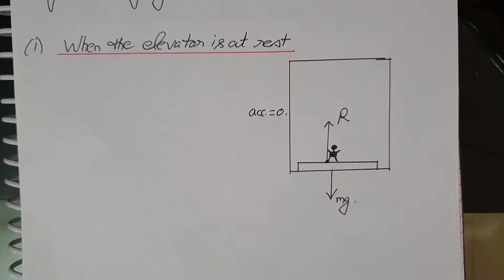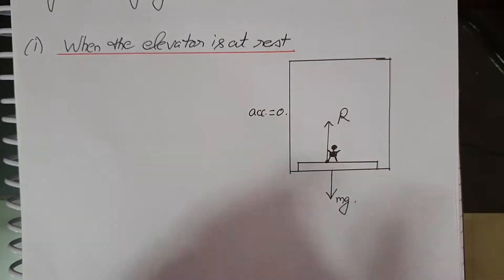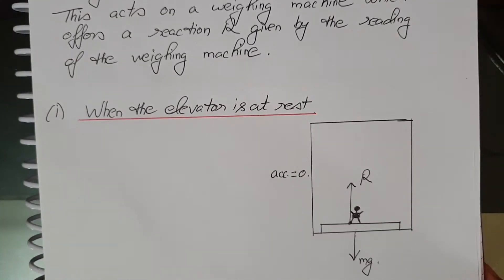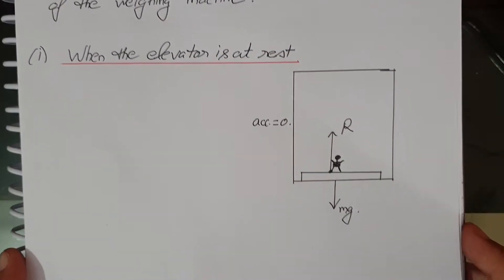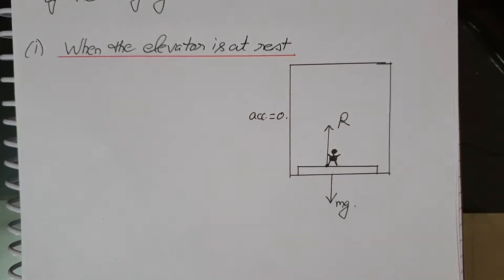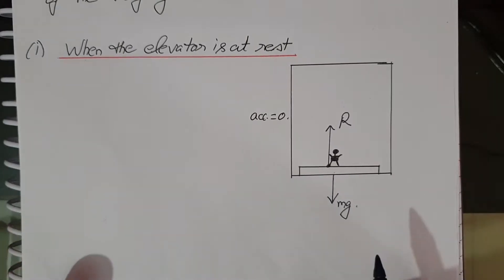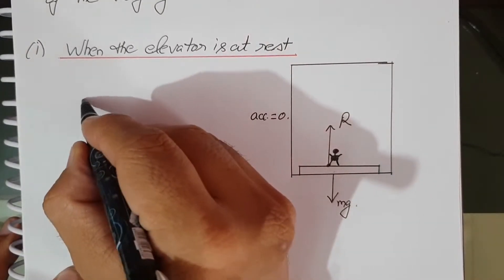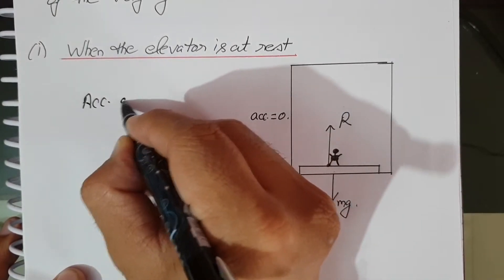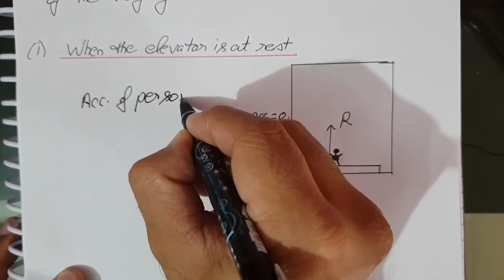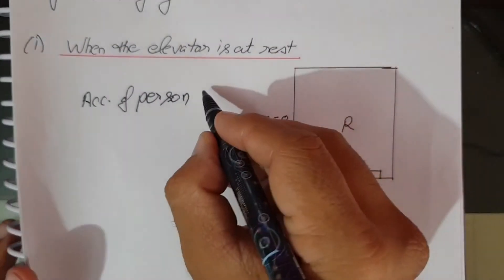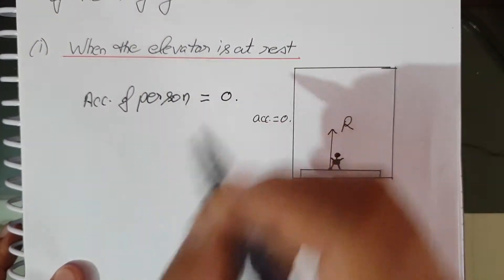We shall now discuss how R is related to mg in different situations. First, when the elevator is at rest. At rest means acceleration is zero. When the elevator is at rest, the acceleration of the person is also zero.